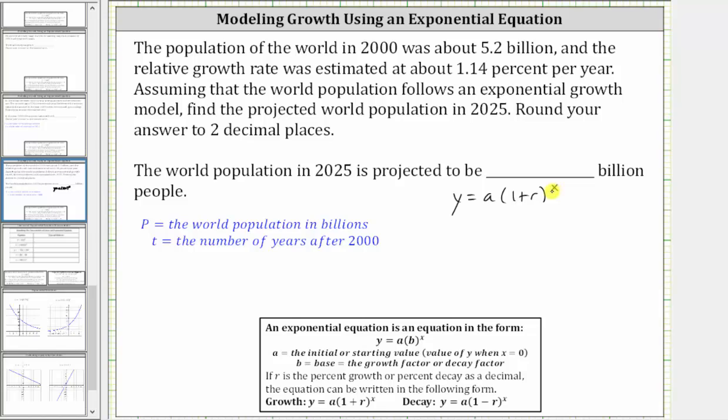Instead of using x and y, let's use the variables t and p, where p is the world population in billions, and t is the number of years after the year 2000.